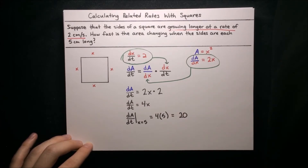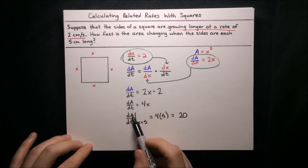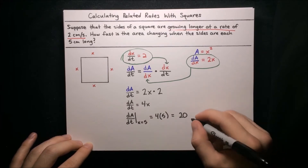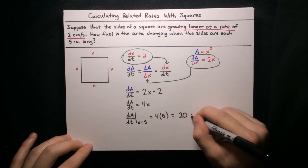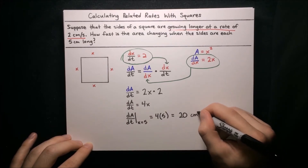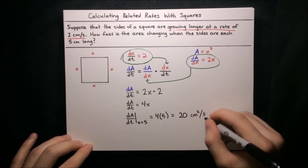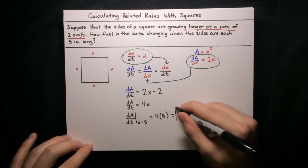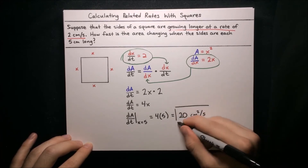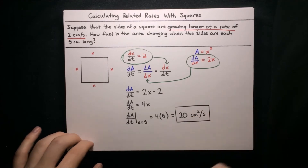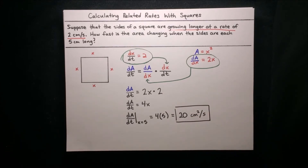Putting some units on that — it's units of area over units of time. Area is length squared and the length unit is centimeters, so this is centimeters squared per second. So 20 centimeters squared per second is how fast the area is changing when the sides are each 5 centimeters long.